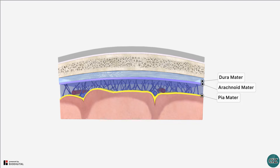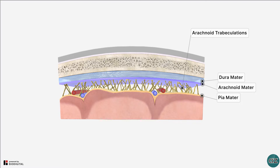Understanding the anatomy of the arachnoid mater is key to understanding the mechanisms and pathology of subarachnoid haemorrhage. The arachnoid mater is the middle meningeal layer and gets its name from its spiderweb-like appearance. Here you can see that there are thin filaments known as arachnoid trabeculations which traverse the subarachnoid space and blend with the pia mater.